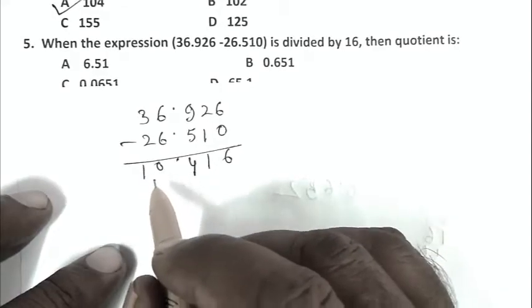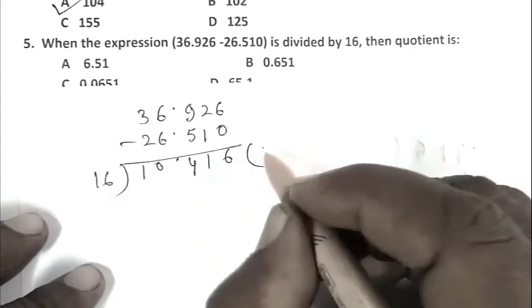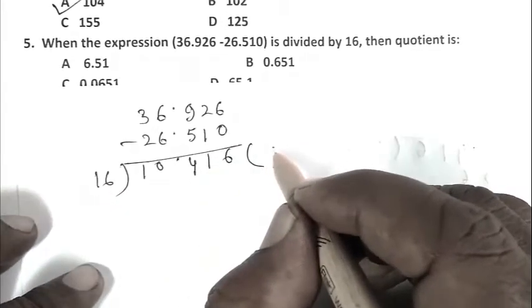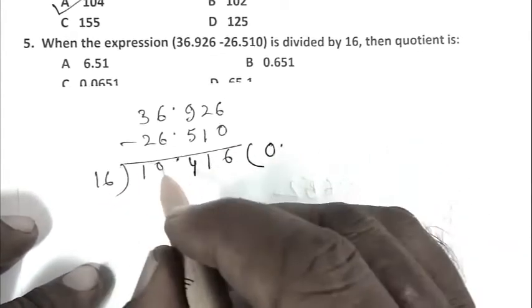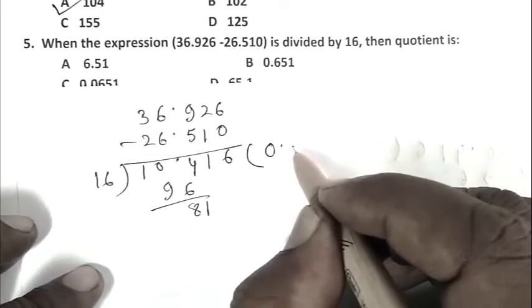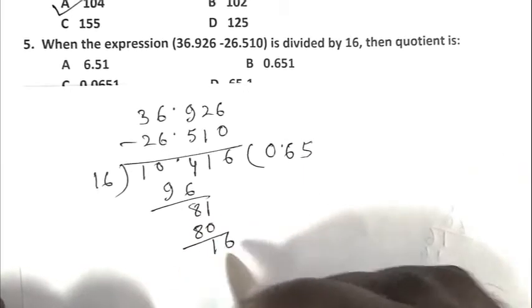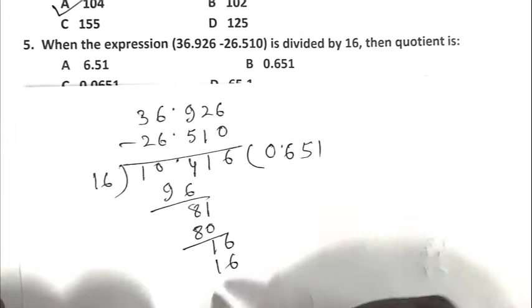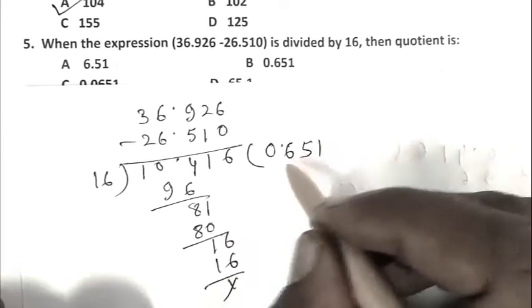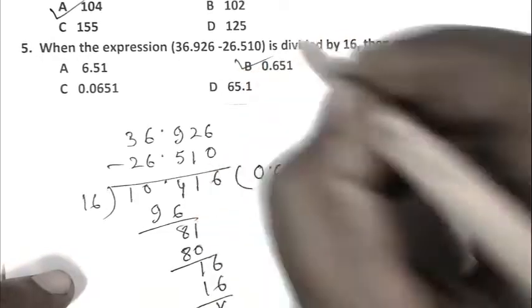We divide 10.416 by 16. We get first 0, after that point, then 96, 8, 1, 5 times 80, 1, 6, 1 times 1, 6. The answer is 0.651. B is the right answer.